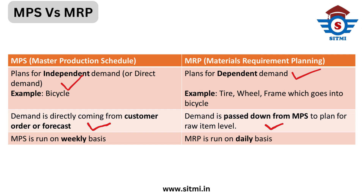An important difference is that MPS is usually run on a weekly basis, whereas MRP is run usually on a daily basis. MRP is more tactical in nature — it plans for day-to-day requirements of operations. However, MPS plans for weekly or monthly requirements of production or operations.